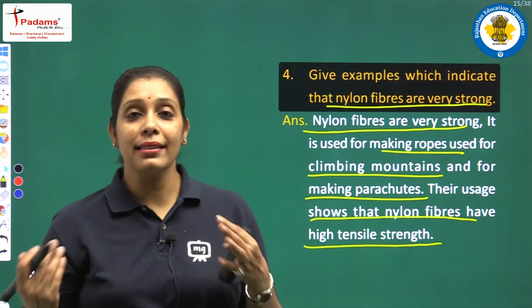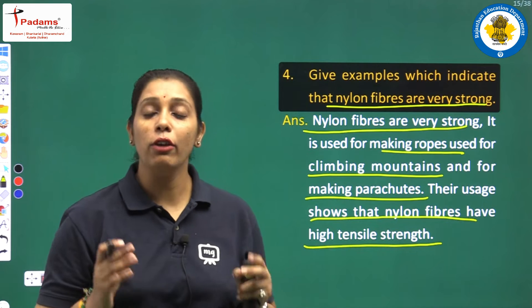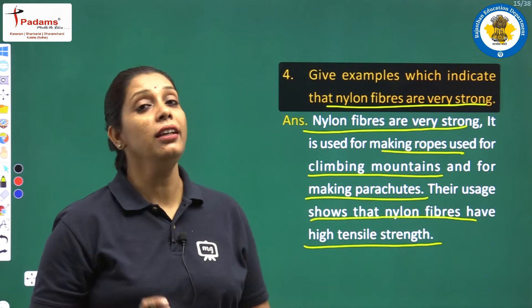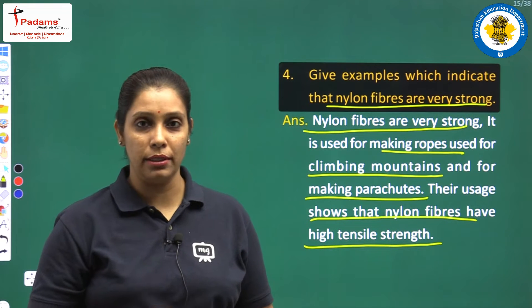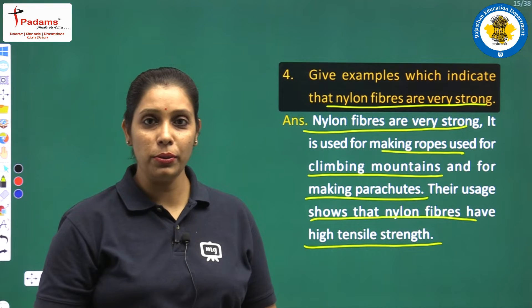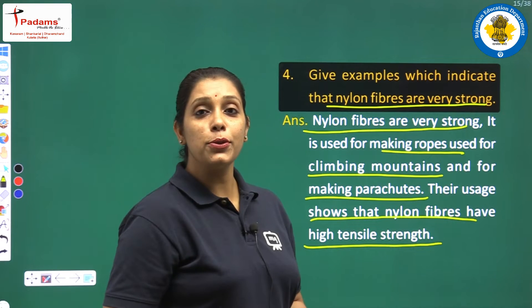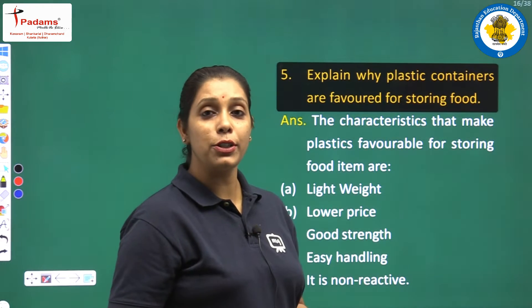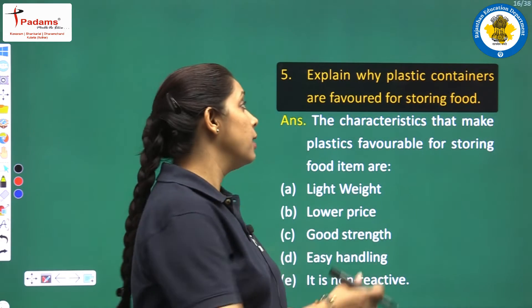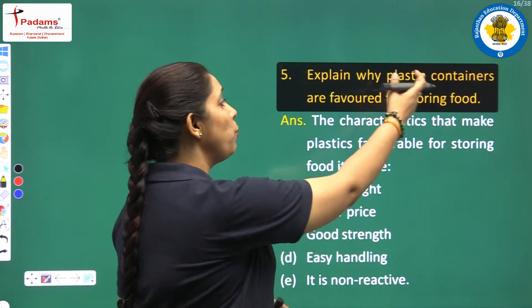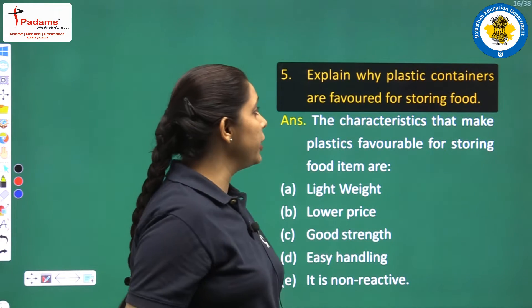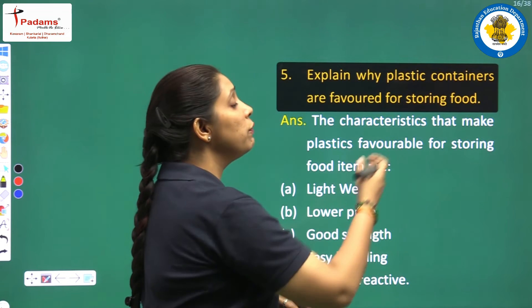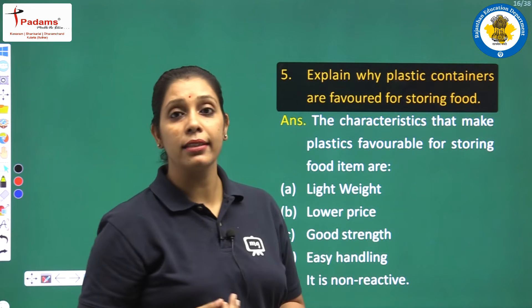We can prove this just by giving examples. Let us proceed to the next question: explain why plastic containers are favored for storing food.